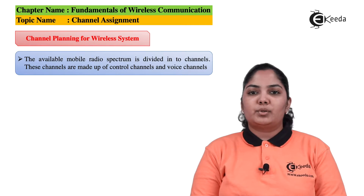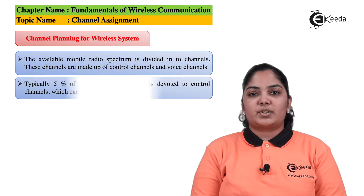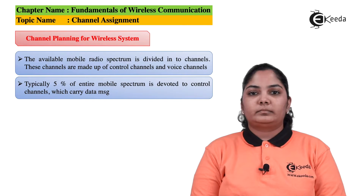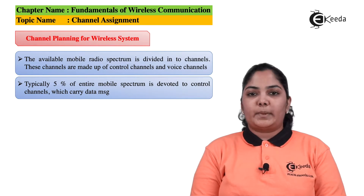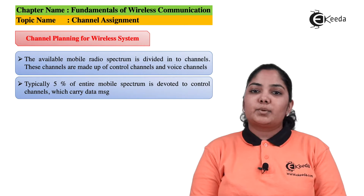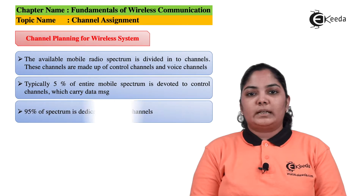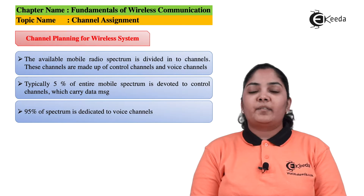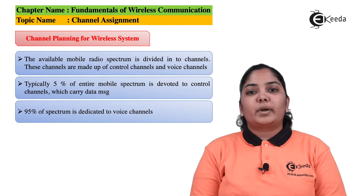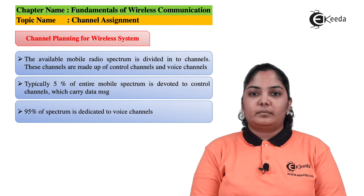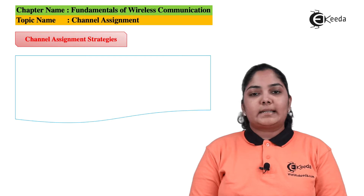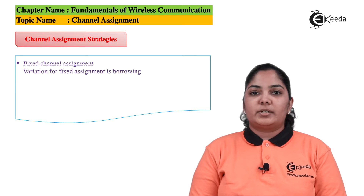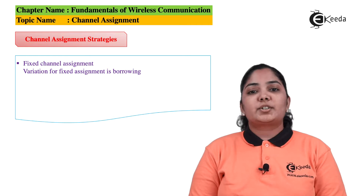Hence the entire spectrum is divided such that we have few control channels and maximum voice channels. 5% of the allotted spectrum is used as control channels and the remaining 95% is given as voice channels. There are two types of channel assignment strategies.